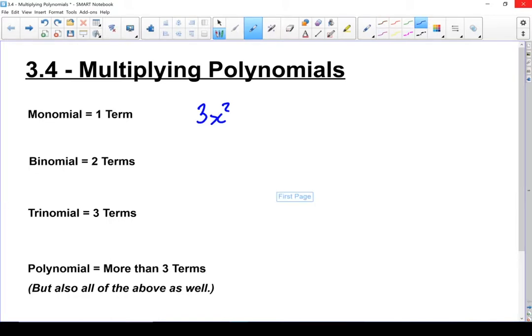A couple of examples, a monomial can look like that. It's only got one term. A binomial might look like this. 3x squared plus 2x. See? Two terms, a binomial.